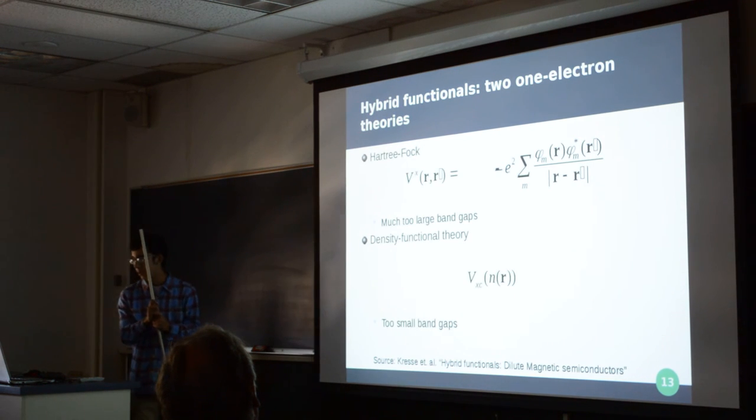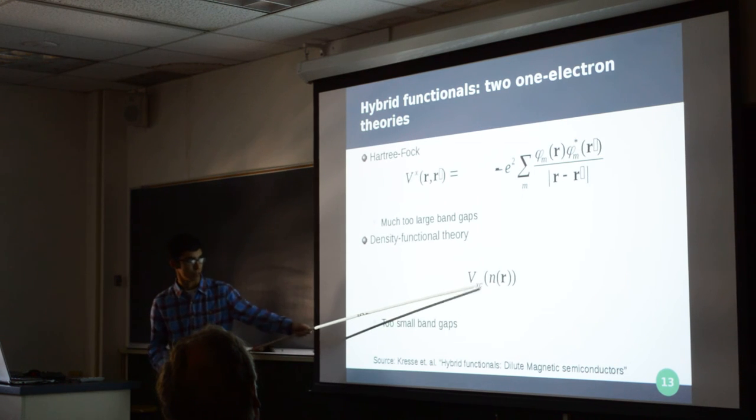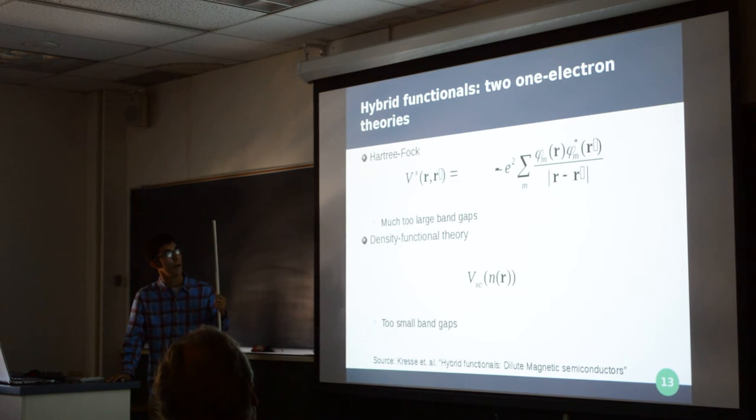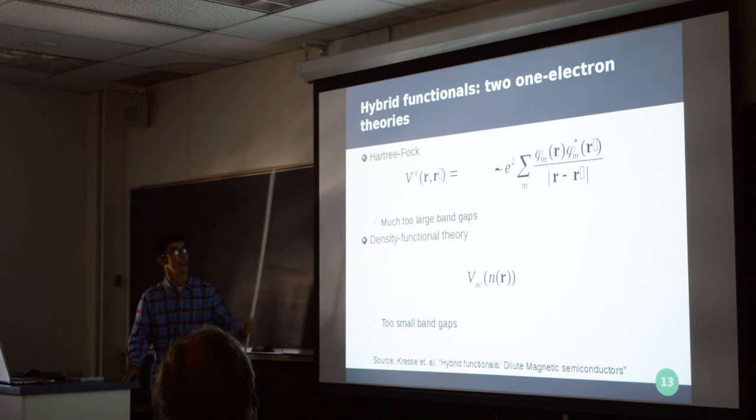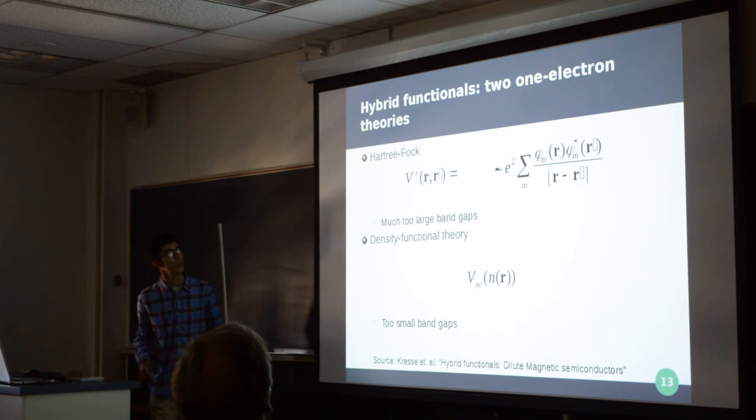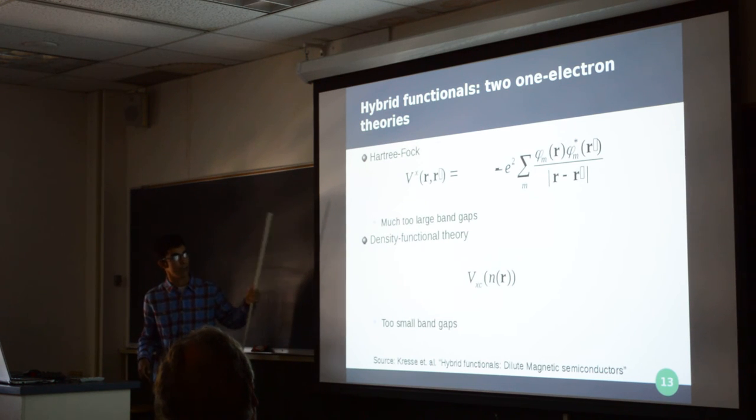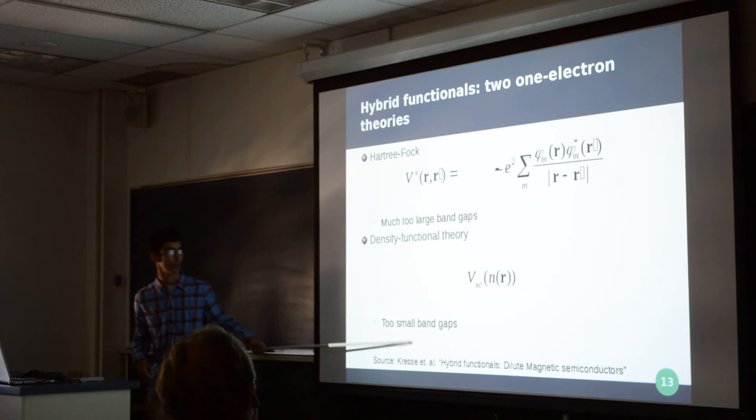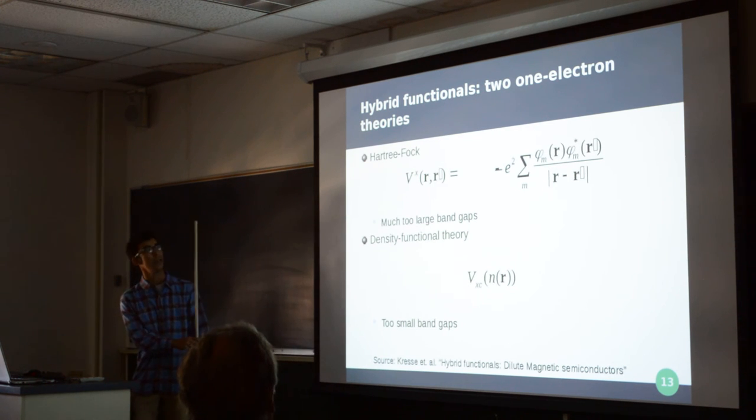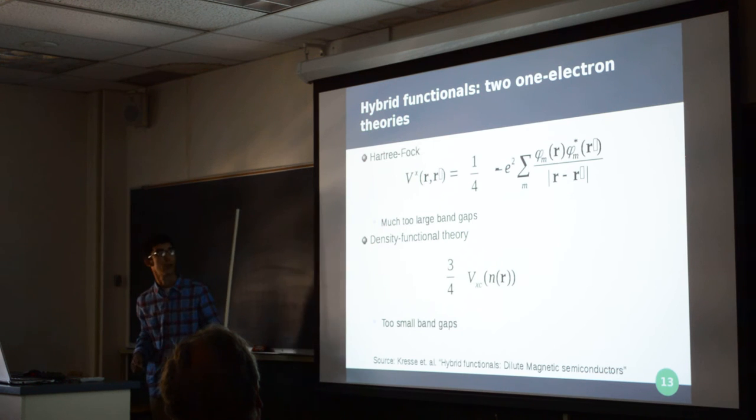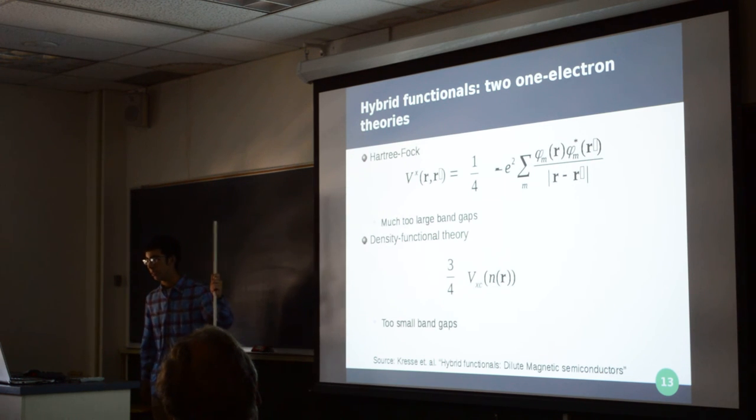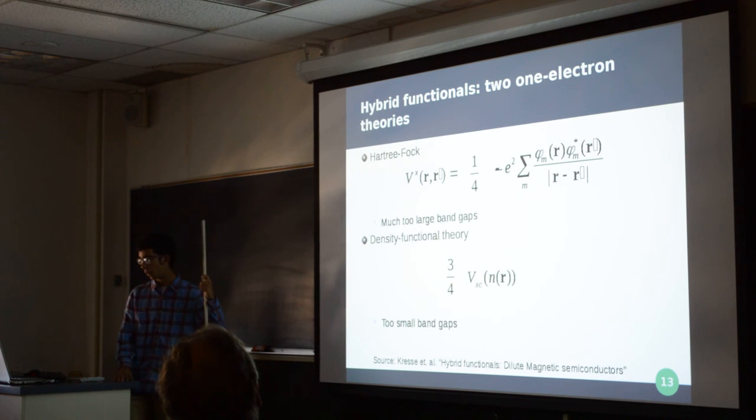Now, getting into the optics part. This density functional theory uses this density functional, which is an exchange correlation potential, to describe the electron interaction terms. But, what we can use is an approximation called the Hartree-Fock approximation. These boxes are supposed to be primes. But, for each of these theories we have problems with the band gap. The DFT has too small a band gap. The Hartree-Fock tends to have much too large band gaps. So, we can take a fraction of each approximation. And, what empirically has been determined is one-fourth Hartree-Fock approximation and three-fourths DFT tends to be a good correction for most materials in terms of band gap.